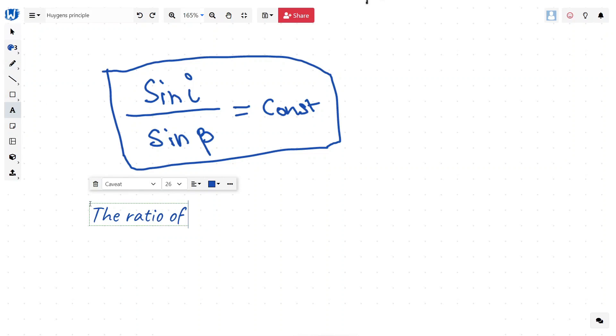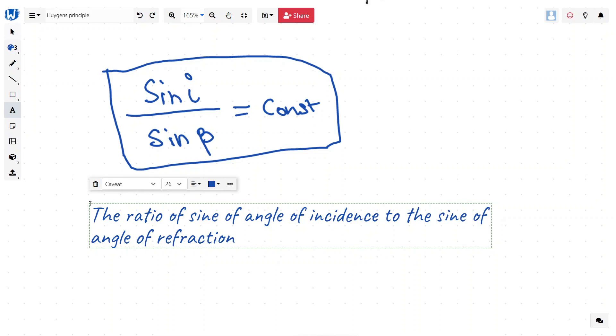Ratio of sine of angle of incidence to the sine of angle of refraction is constant for a given pair of medium.